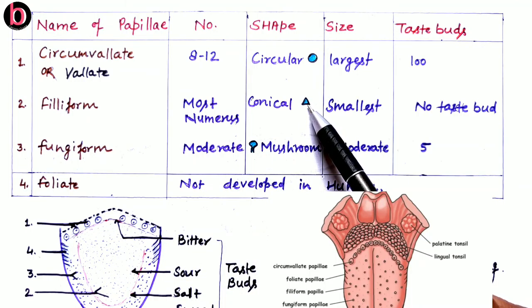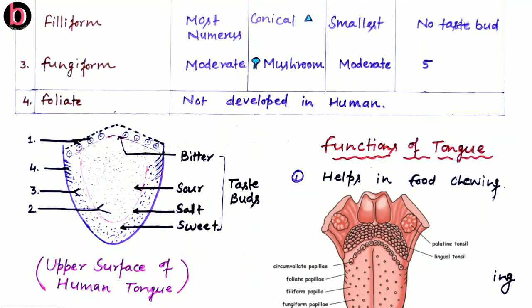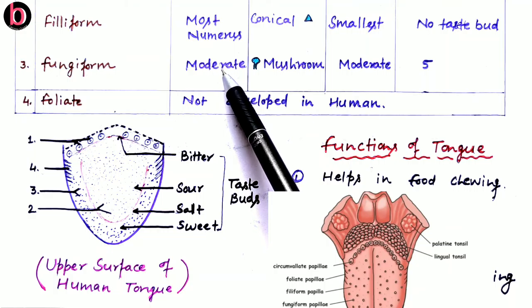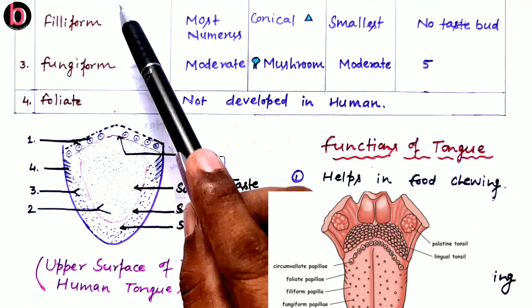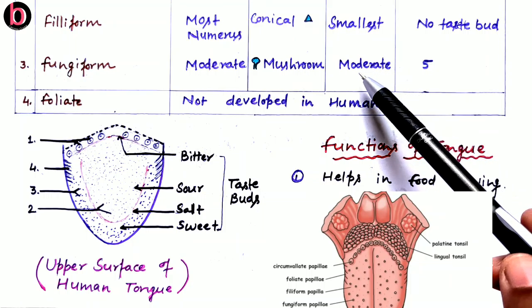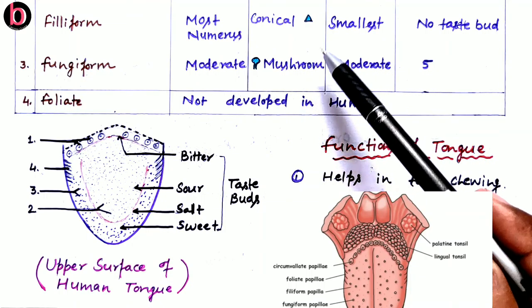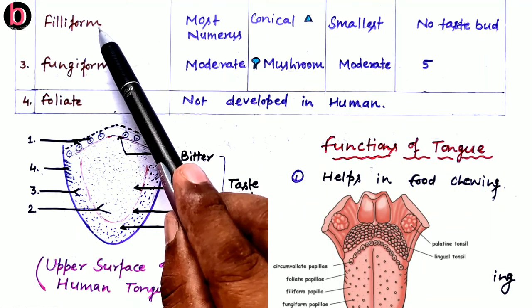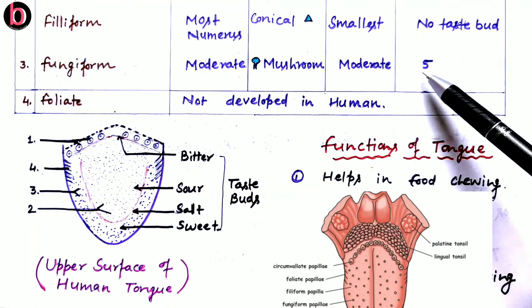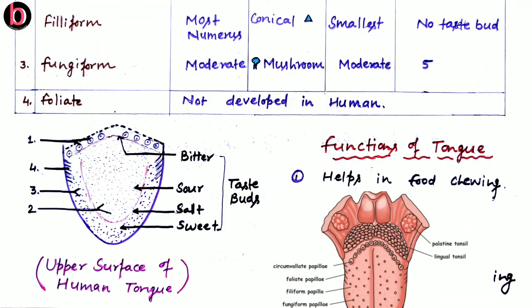The third type is fungiform papillae. They are moderate in number, fewer than filiform but more than circumvallate papillae. Their shape is mushroom-like, and their size is also moderate — larger than filiform but smaller than circumvallate papillae. The number of taste buds on each fungiform papilla is also moderate; circumvallate papillae carry nearly 100 taste buds each, while filiform papillae have none.